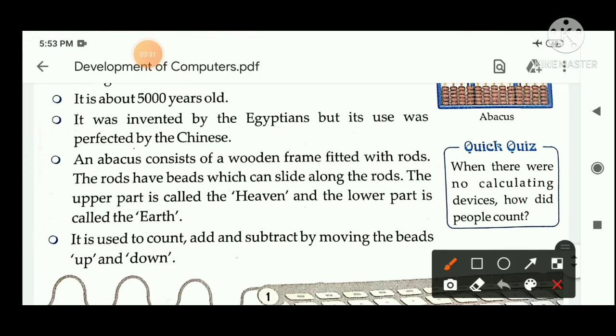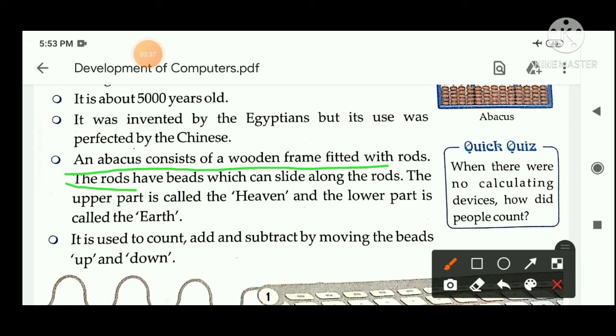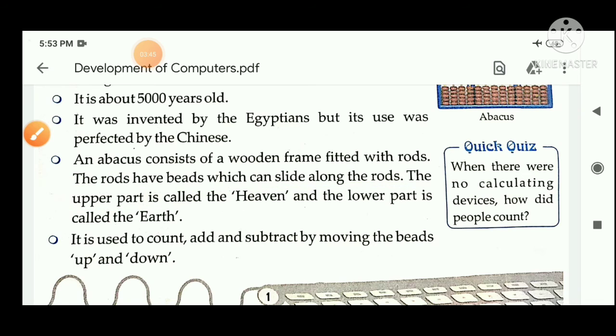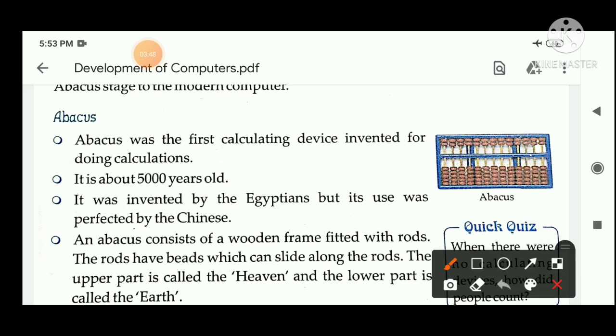An abacus consists of a wooden frame fitted with rods. The rods have beads which can slide along the rods. The upper part is called the Heaven and the lower part is called the Earth. Look at here, this is abacus.